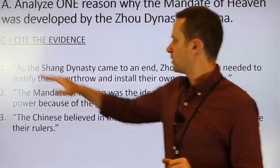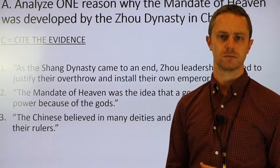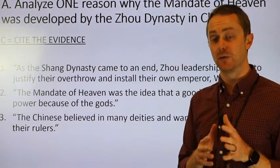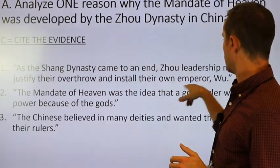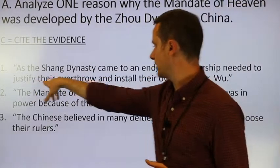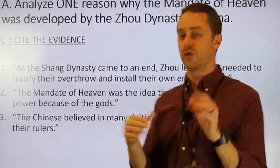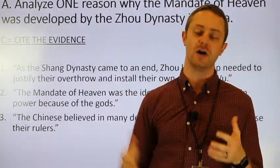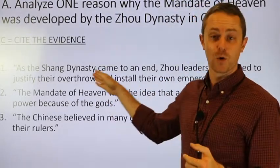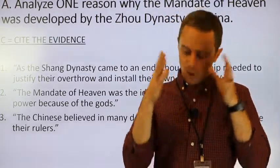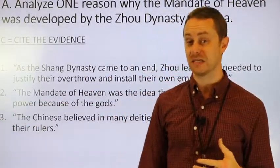Citing specific evidence. Option number one says: as the Shang Dynasty came to an end, Zhou leaders needed to justify their overthrow and install their own Emperor Wu. That sounds really specific — it gives me a reason and it's related to the topic of the prompt. We've got the Zhou Dynasty, the previous dynasty the Shang, a specific Emperor named Wu, and here's the reason: they overthrew the Shang, and in order to get the people to follow them they needed to provide a mandate to legitimize their own Emperor. As a rule of thumb, your evidence should only work for this specific prompt — if you can plop it into another prompt's answer, it's probably not specific enough.